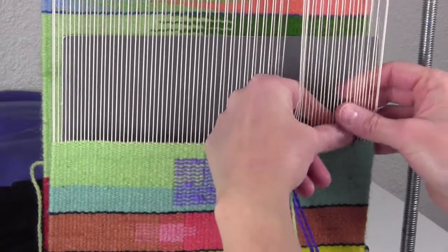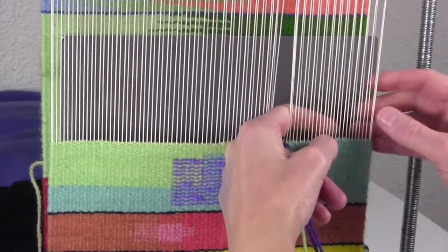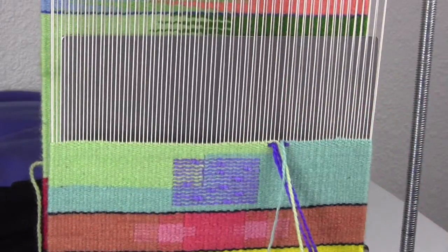You can also encourage it a little bit. If you have strong cotton seine twine warp, you can encourage those to come apart.